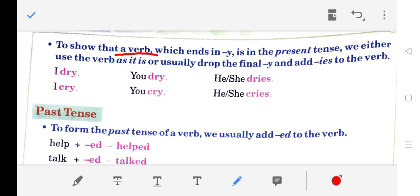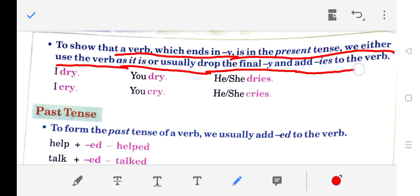To show that a verb which ends in 'y' is in the present tense, we either use the verb as it is, or usually drop the final 'y' and add 'ies' to the verb. I cry, you cry, he/she cries.